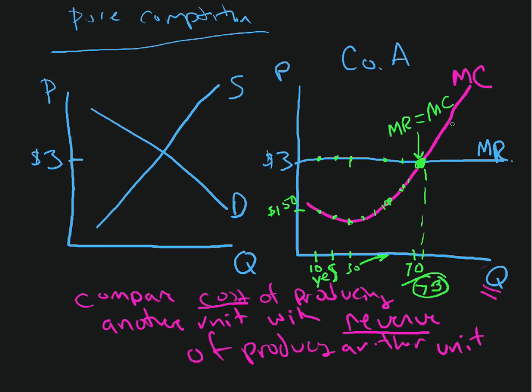Because if they go forward out in here, the cost is greater than the revenue. Should they do that? And the answer out here is no way. If they produce way out here, they're losing money. If they produce back in here, they're making money.